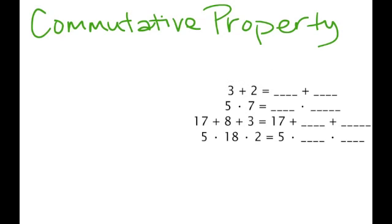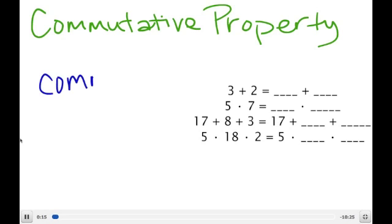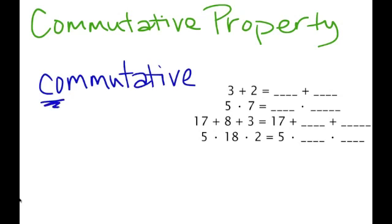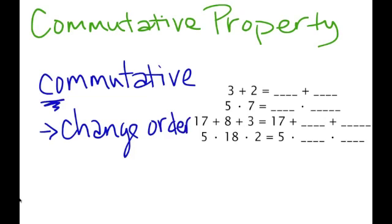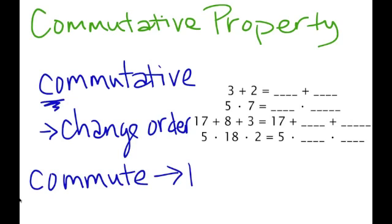Alright guys, let's just go ahead and get right into it. The very first section of your foldable is the commutative property. On the left hand side, what does the commutative property mean? You can think of commutative as the first two letters telling you that you can CO, or change order. Another way to remember commutative is the word commute, meaning people travel somewhere — so the terms in your expression can travel.